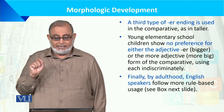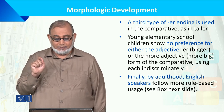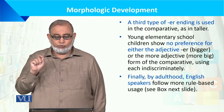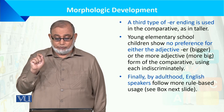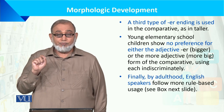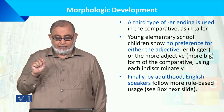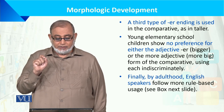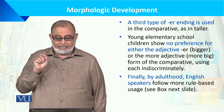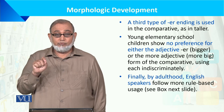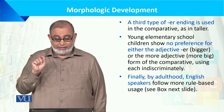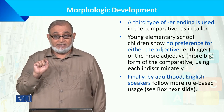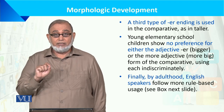A third type of ER ending is used in the comparative, as in 'taller' — adjectives میں comparison یا degrees کا level۔ Young elementary school children show no preference for either the adjective ER form (e.g., 'bigger') or the 'more + adjective' form (e.g., 'more big'), using each indiscriminately. Finally, by adulthood, English speakers follow more rule-based usage.